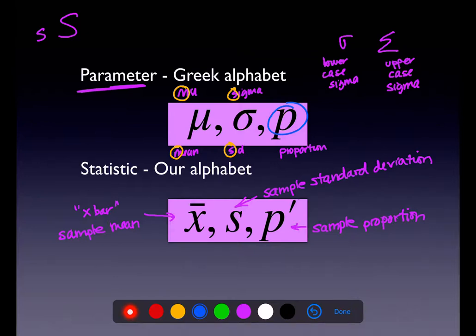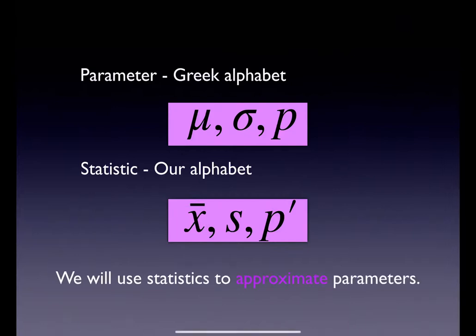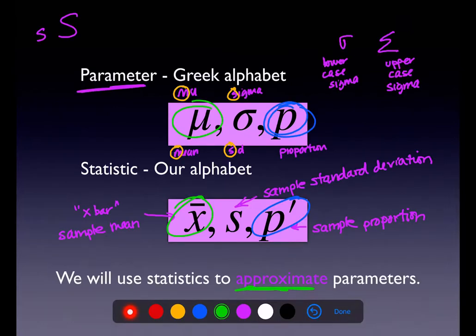If I ever want to find p, let's go back to that bead experiment. If I wanted to find the true proportion of red beads in that giant container — instead of counting all of the beads — I would just find my sample proportion, put a little margin of error on either side, take my statistic, add a little margin of error, and make a guess as to what the true proportion was. Similarly, if I was interested in a population mean but didn't want to run a census, I would take my sample, find the sample mean, and put a little margin of error on either side.